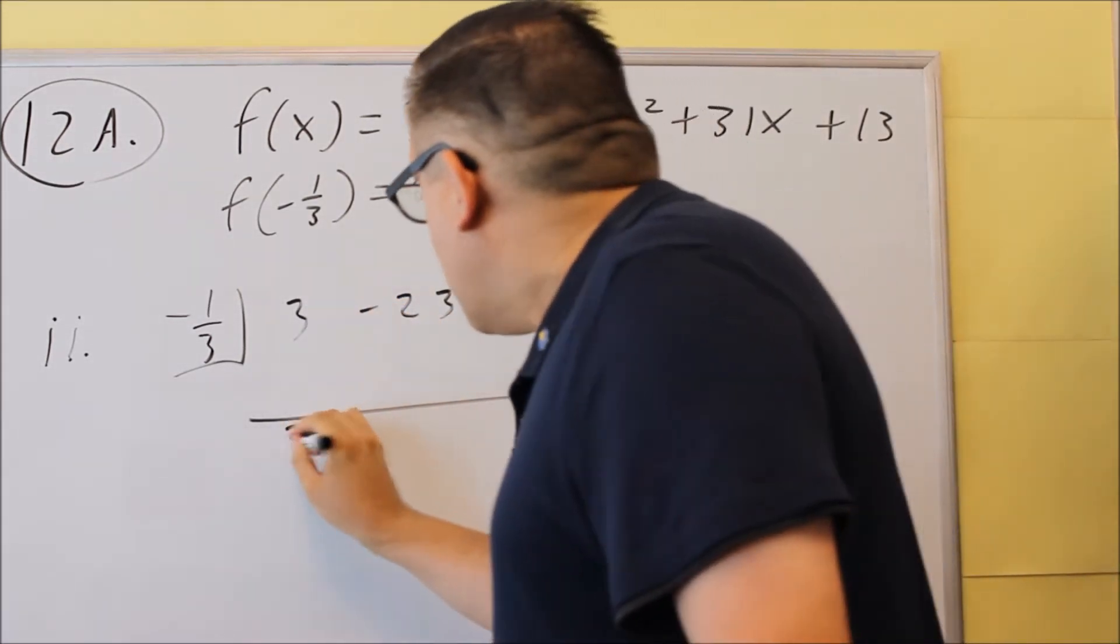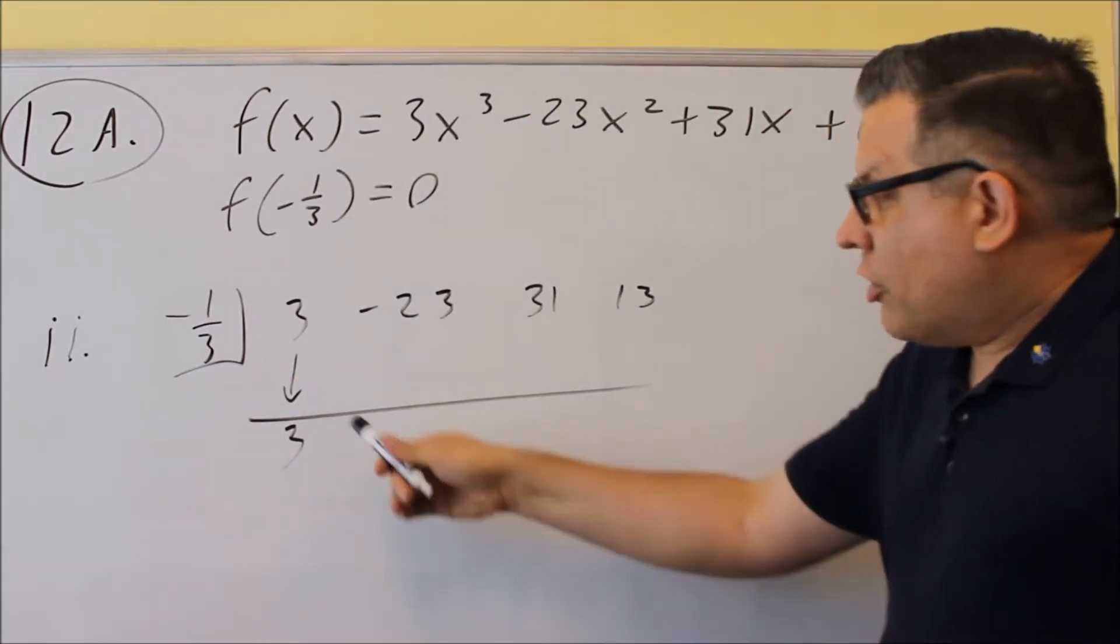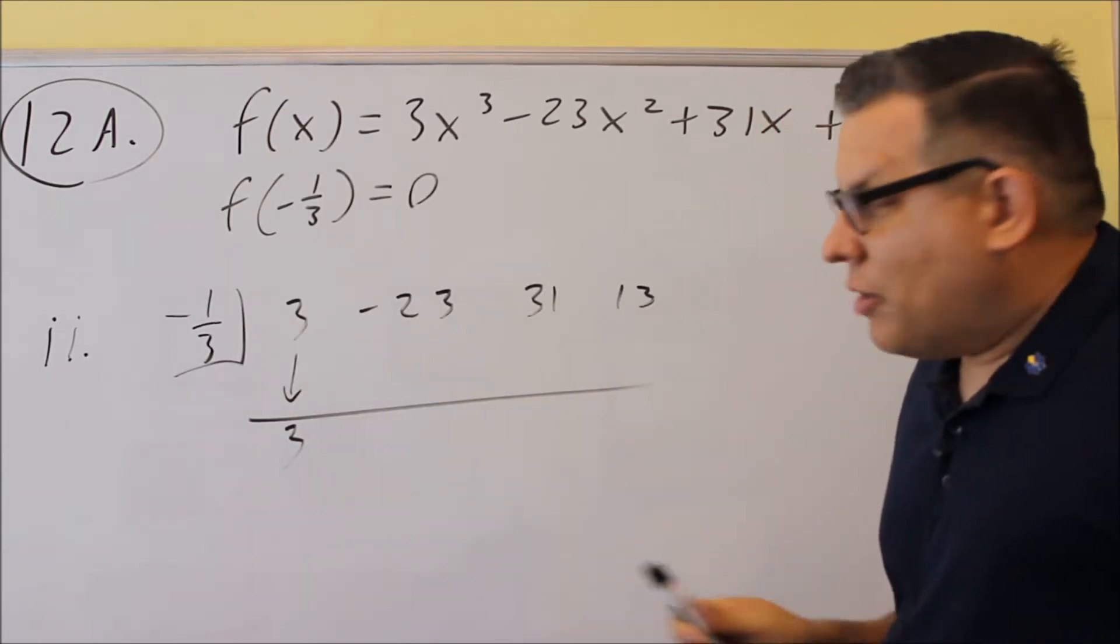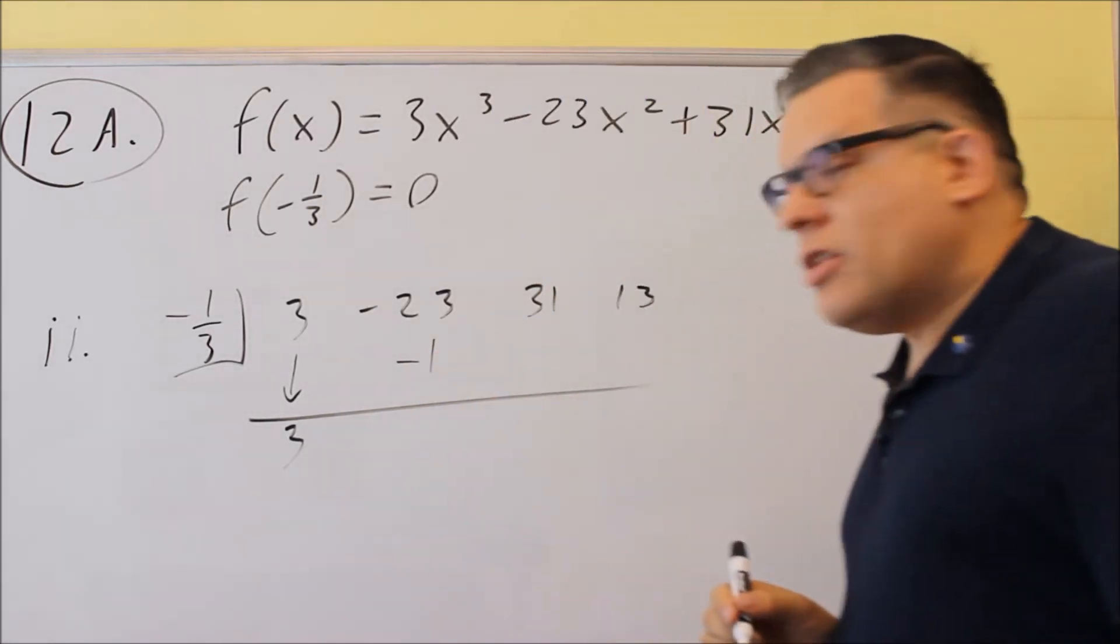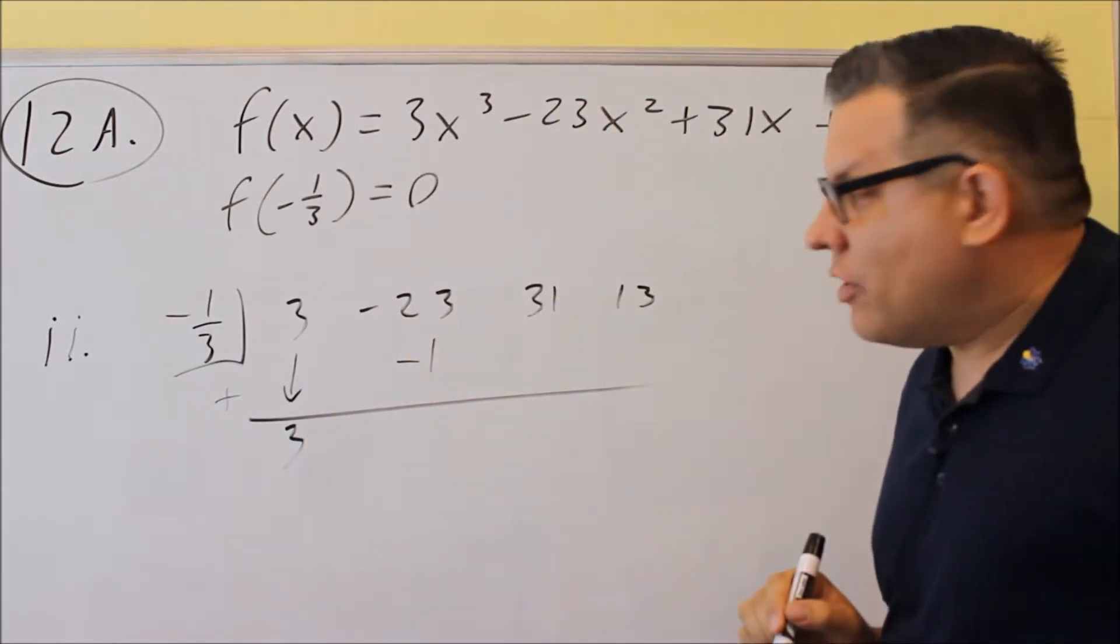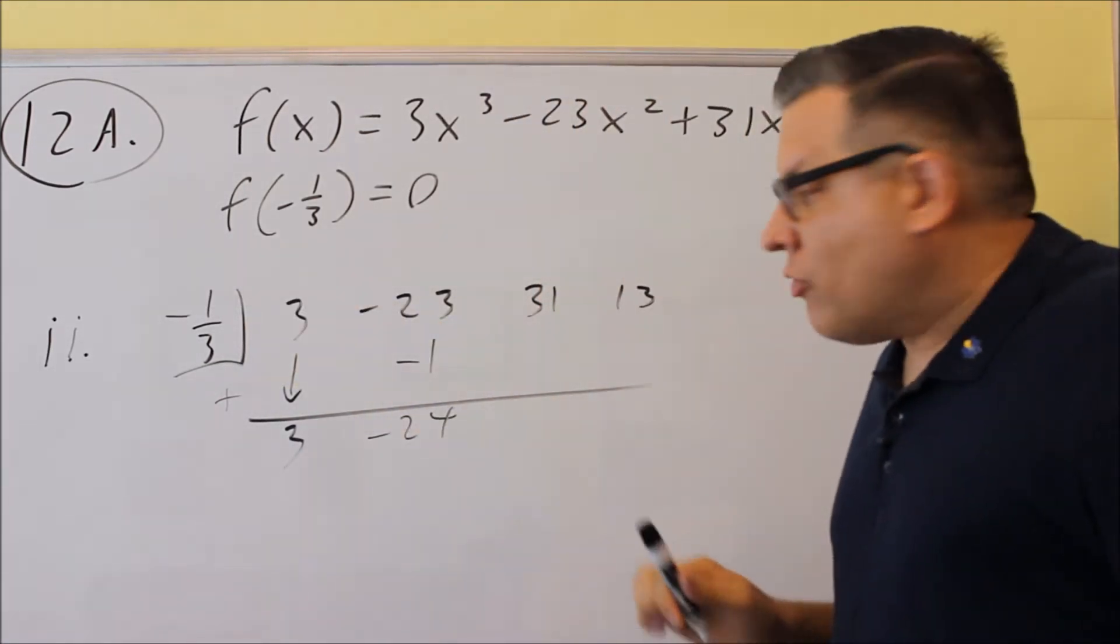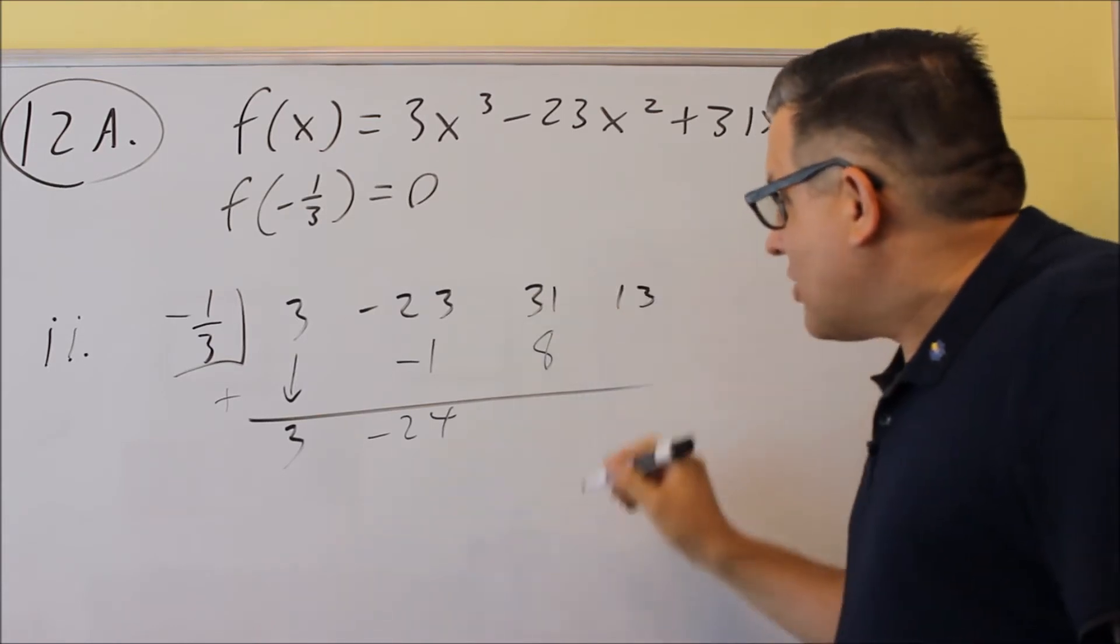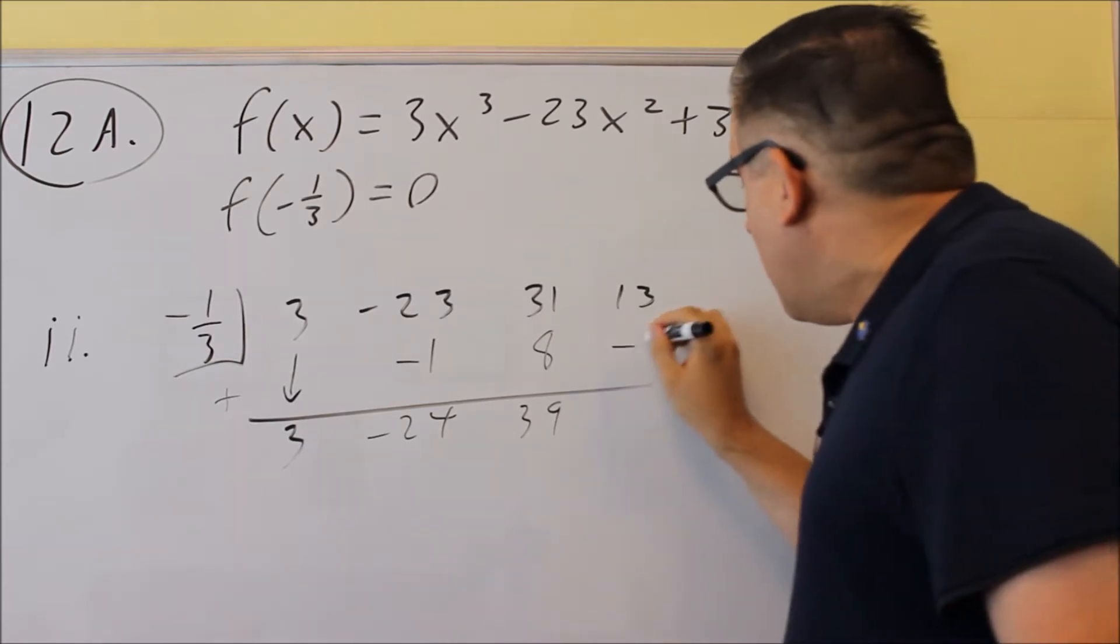Synthetic works. The first number is going to drop straight down, so you always just take that first number and drop it down. You're going to multiply this number by the number in the box. That result goes underneath in the next column. 3 times negative 1 third is negative 1. That goes in the next column. When you do synthetic, you're always adding everything. So we're going to add that together, we get negative 24. Negative 24 times negative 1 third is positive 8. We're going to add that together, 39. 39 times negative 1 third, you're going to get negative 13.